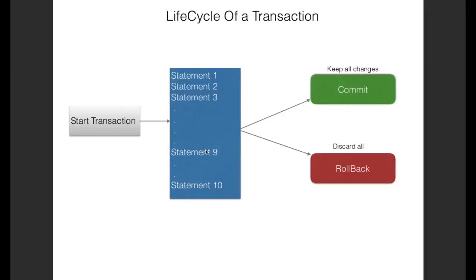The figure here shows the life cycle of a transaction. It starts from the START TRANSACTION command, then there are a set of SQL statements. Once we have the START TRANSACTION command executed, we execute our list of statements. Once all statements are executed, we end the transaction using the COMMIT or ROLLBACK command. Using COMMIT preserves all changes made by the statements, while using ROLLBACK means none of those changes are preserved.